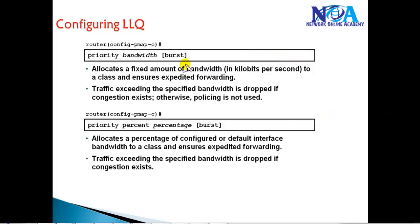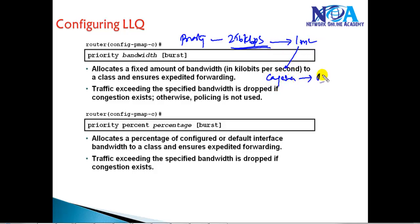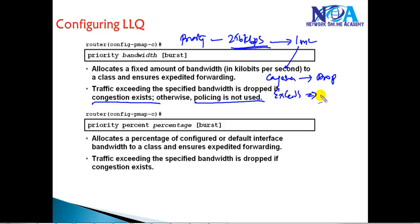The dropping of excess traffic depends on the kind of priority we define. If we define 256 kbps as priority traffic and it reaches that limit during congestion, excess traffic is dropped — that is strict policing. If it exceeds the limit but there is no congestion, it will still forward the traffic but without priority. It will be treated as normal traffic, like the other classes.